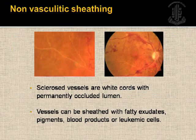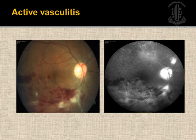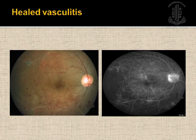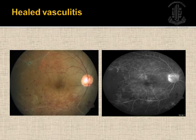Now we will move on to pan-uveitis presenting with exudative retinal detachment. My first patient was a 23-year-old male who complained of sudden decreased vision in both eyes with associated redness, pain, and headache. Fundus fluorescein angiography showed typical pinhead leaks in the early and intermediate stages, which progressed to subretinal pooling of the dye in later stages. Ultrasound showed retinal detachment along with increased choroidal thickness, very classical of Vogt-Koyanagi-Harada disease.